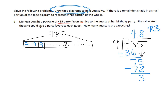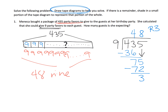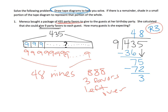So what does that mean? We're going to have 48 nines in our tape diagram, and the remainder of 3 means we're going to have 3 party favors left over. So she's expecting 48 guests, and she knows that she's going to have 3 party favors left over.